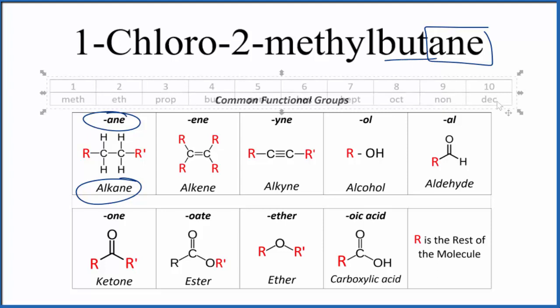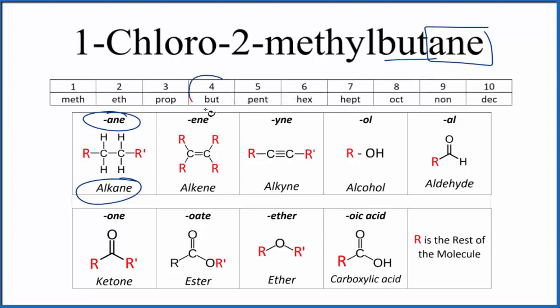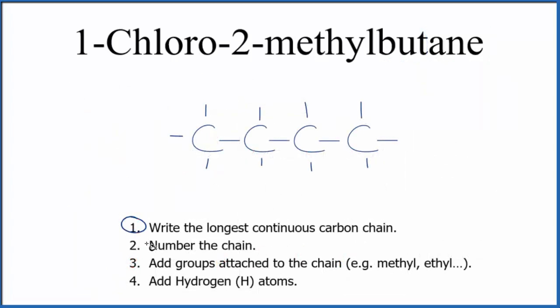The but-, this part right here, that tells us that we'll have four carbons. So we'll have the four carbons, all single bonded, surrounded by hydrogens. So we write the longest continuous chain. That's the butane, four carbons. So right now we just have butane.